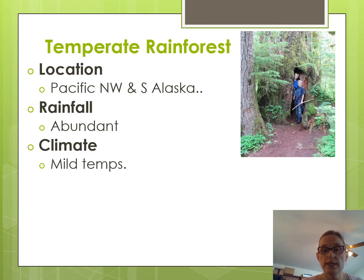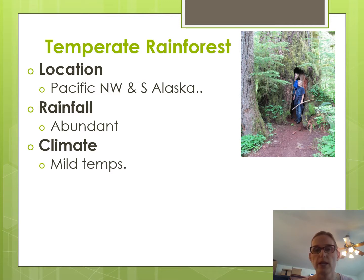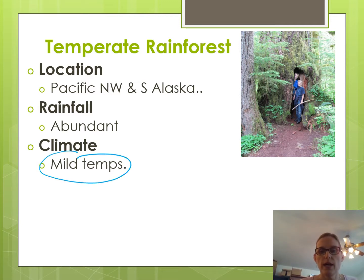The next biome is the temperate rainforest, found in our Pacific Northwest — Oregon, Washington, and southern Alaska. It has abundant rainfall, the same amount as a tropical rainforest, but it is not hot. The temperatures are mild. It doesn't get as cold as, say, Nebraska in the winter, and Seattle hardly ever gets snow.